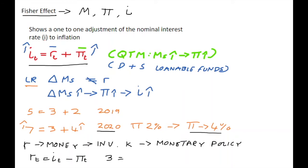Going back to our 2020 example where inflation rose to 4%, the real interest rate of 3 equals nominal 7% minus inflation 4%. So r equals i minus inflation. When inflation grows, the real cost of borrowing tends to decrease — this is why moderate inflation is good for an economy. As inflation rose to 4%, the real cost of borrowing went from 5 to 3.